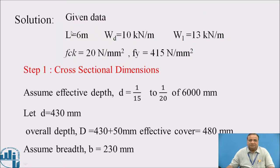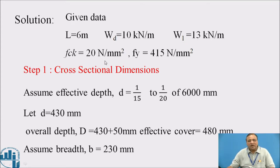Solution. Given data: span is 6 meter each, WD (dead load) is 10 kN per meter, WL (live load) is 13 kN per meter, fck (characteristic strength) is 20 N per mm² and the yield strength of steel fy is 415 N per mm².